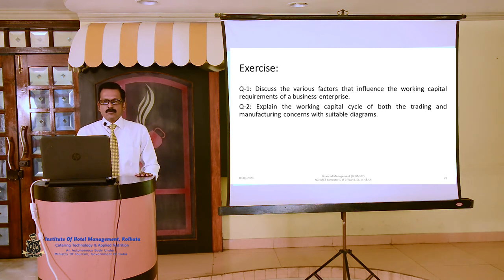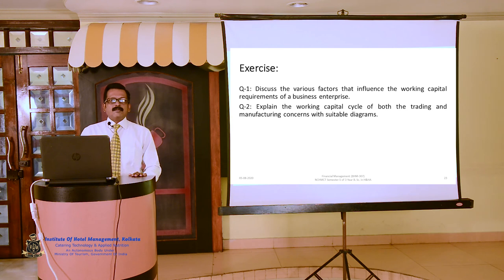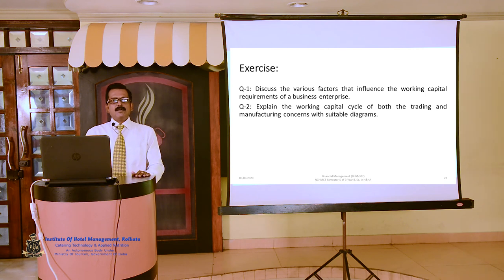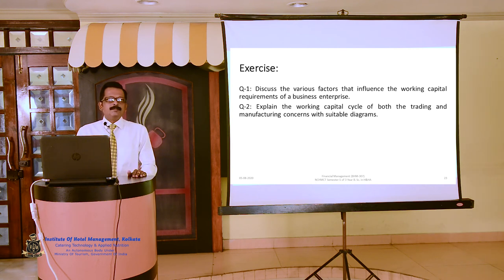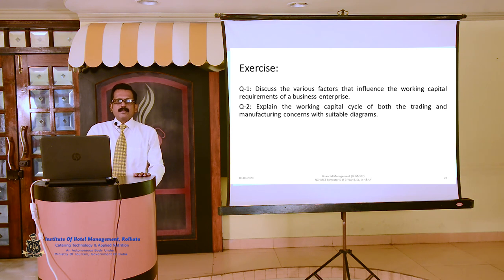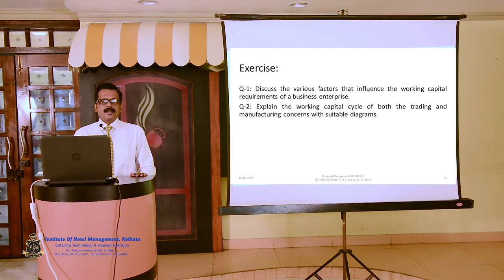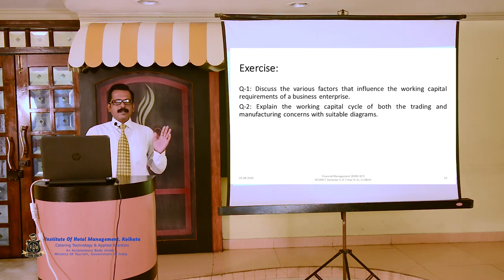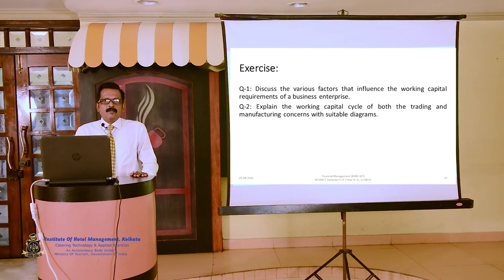You will have to do some exercises on this topic. Question number one: Discuss the various factors that influence the working capital requirements of a business enterprise — you will have to write all 14 factors. Question number two: Explain the working capital cycle of both the trading and manufacturing concerns with suitable diagrams. We have already discussed two types of diagrams — one for trading concerns and one for manufacturing concerns — which you will need to draw and explain.